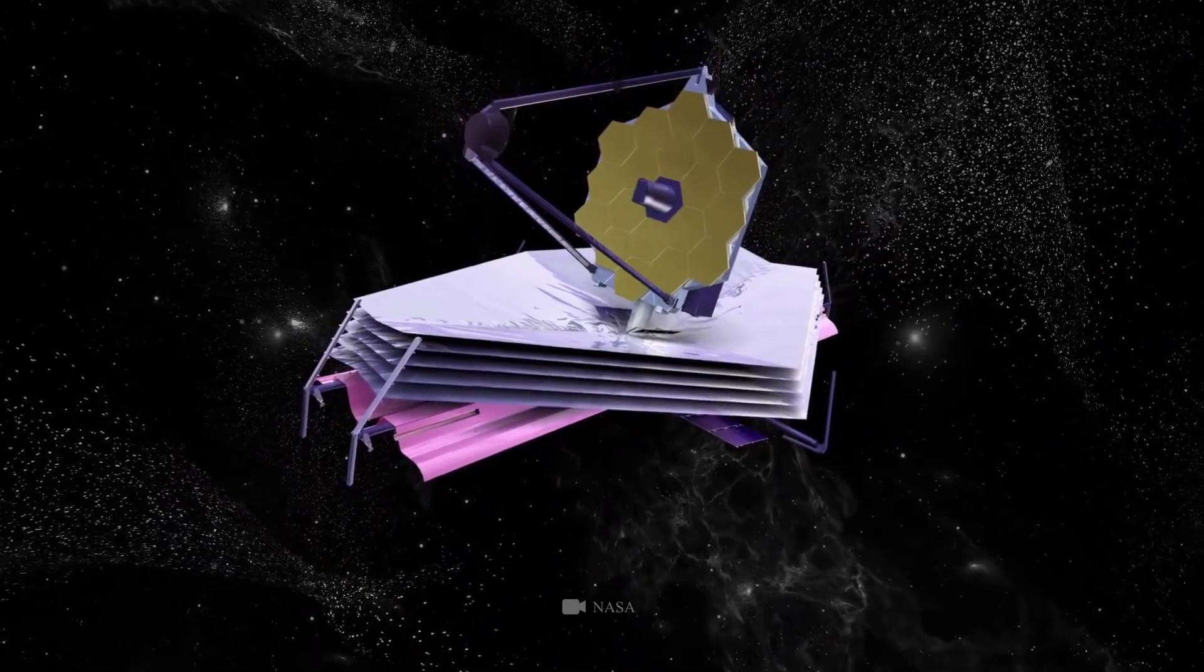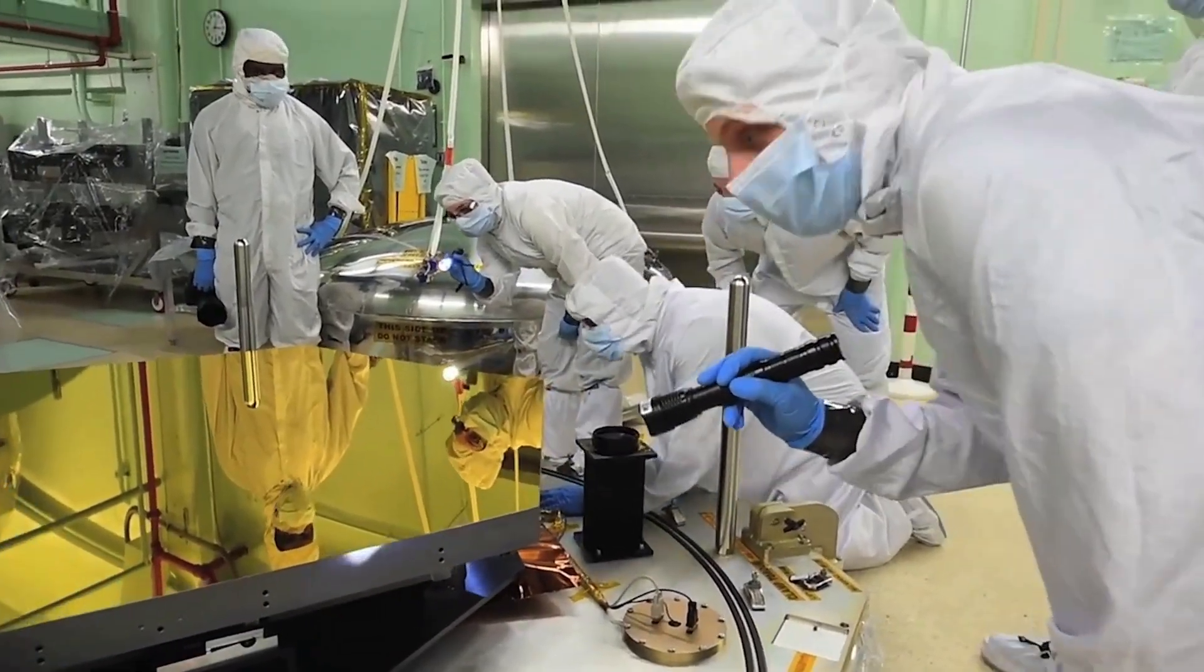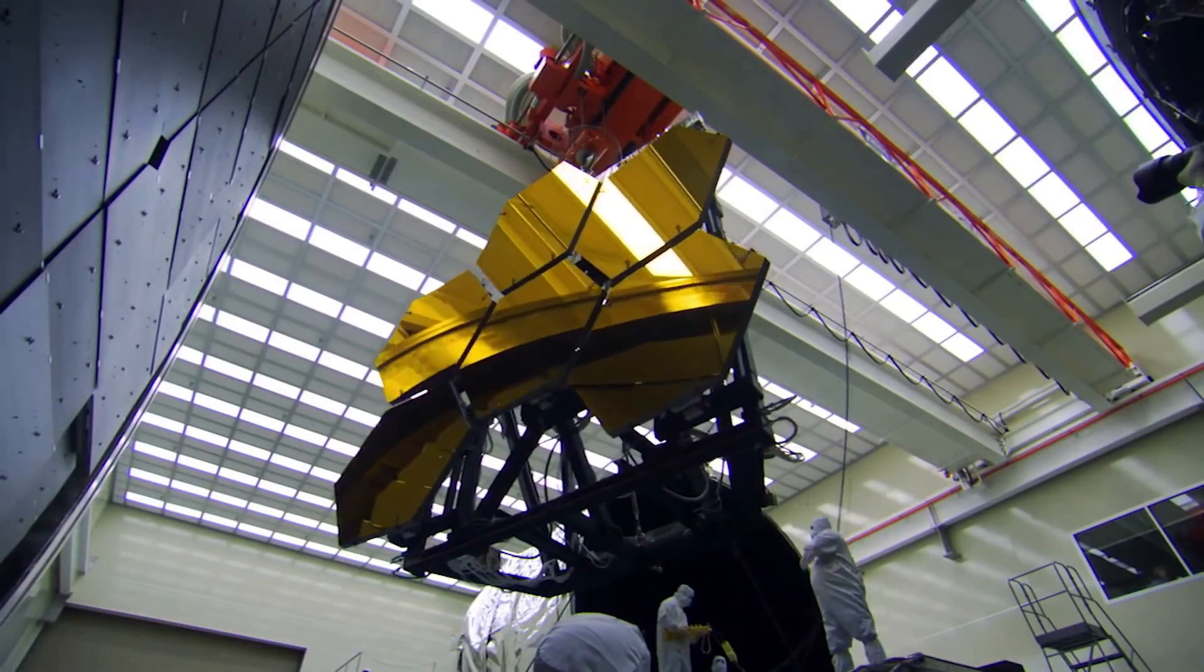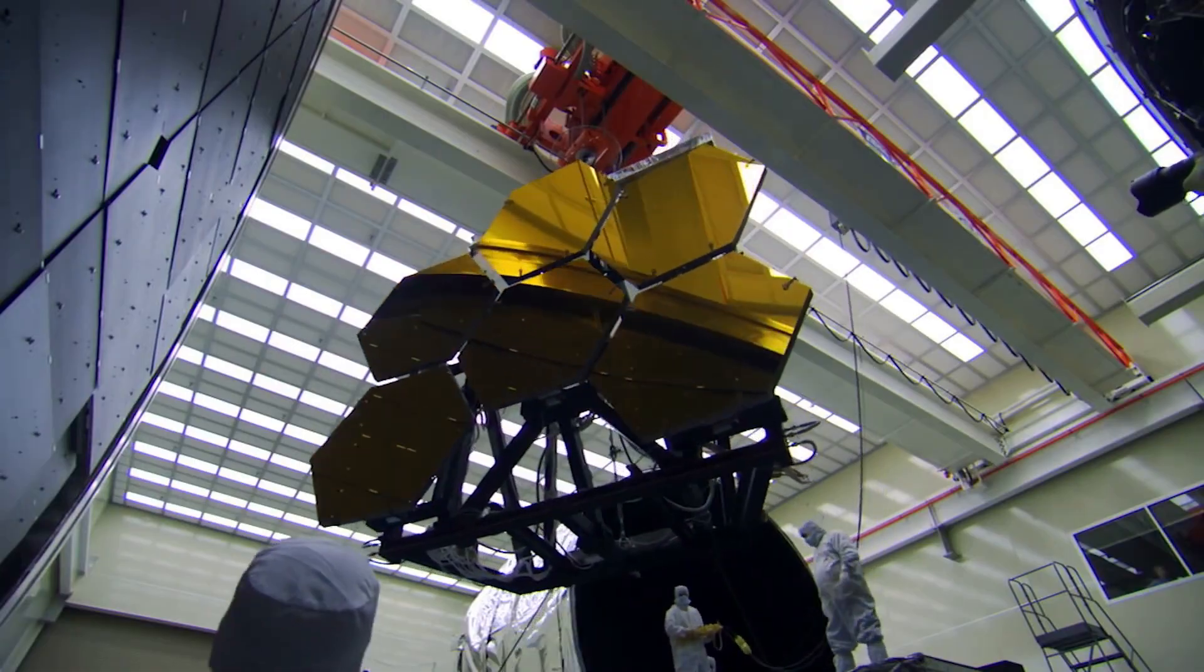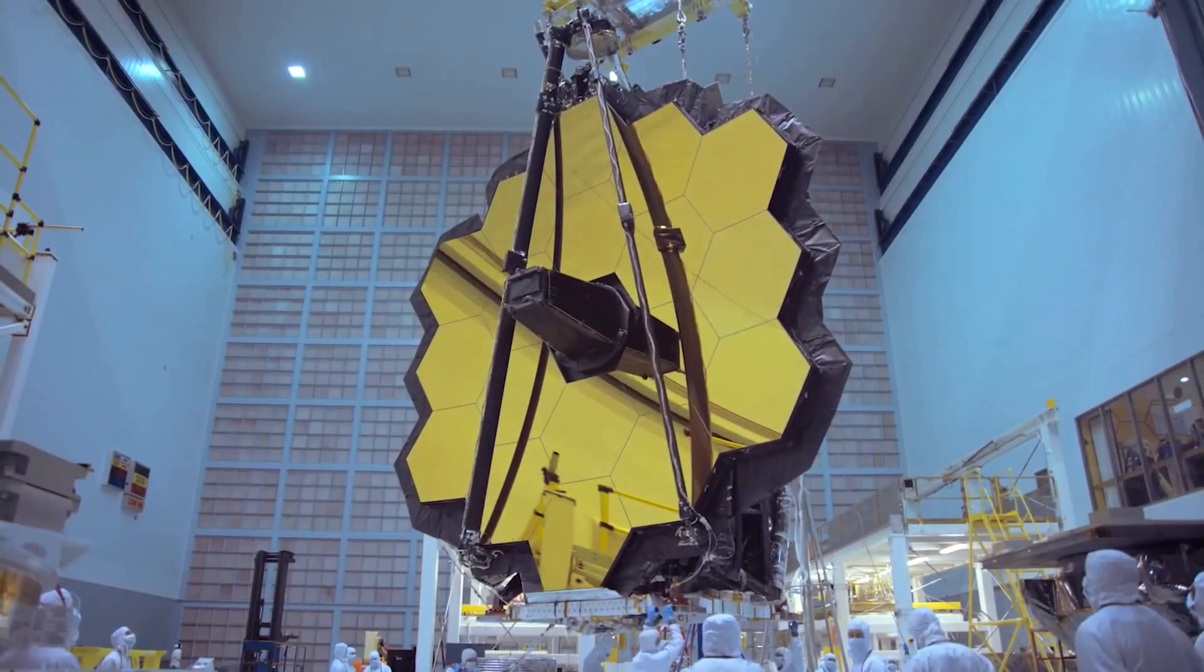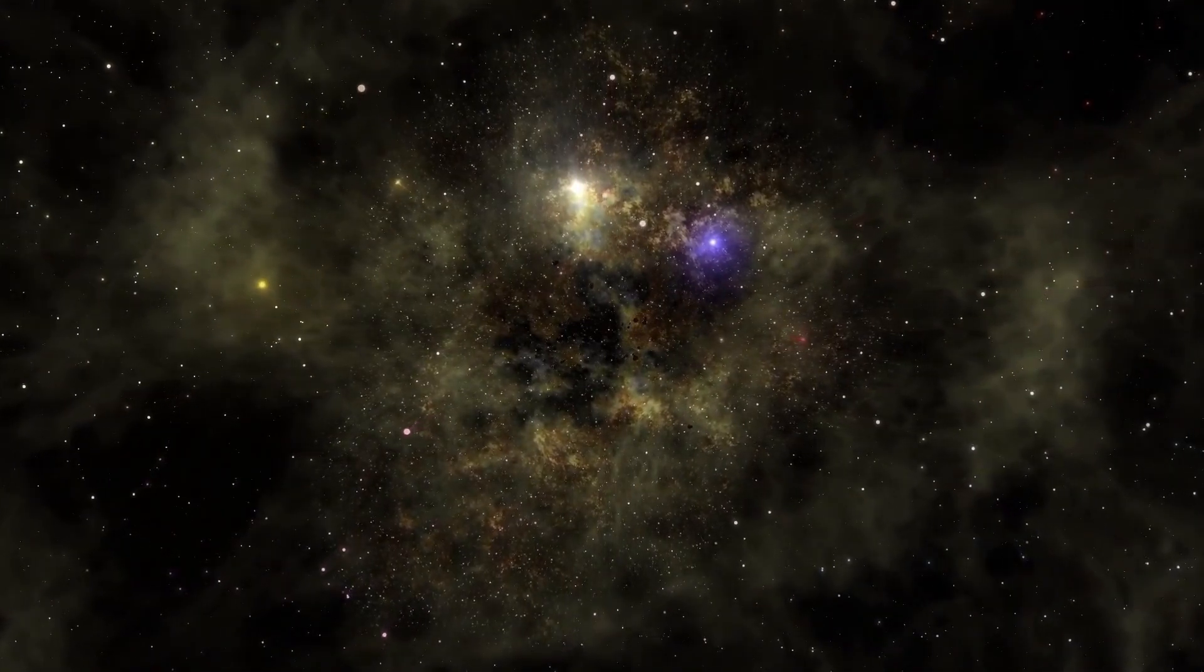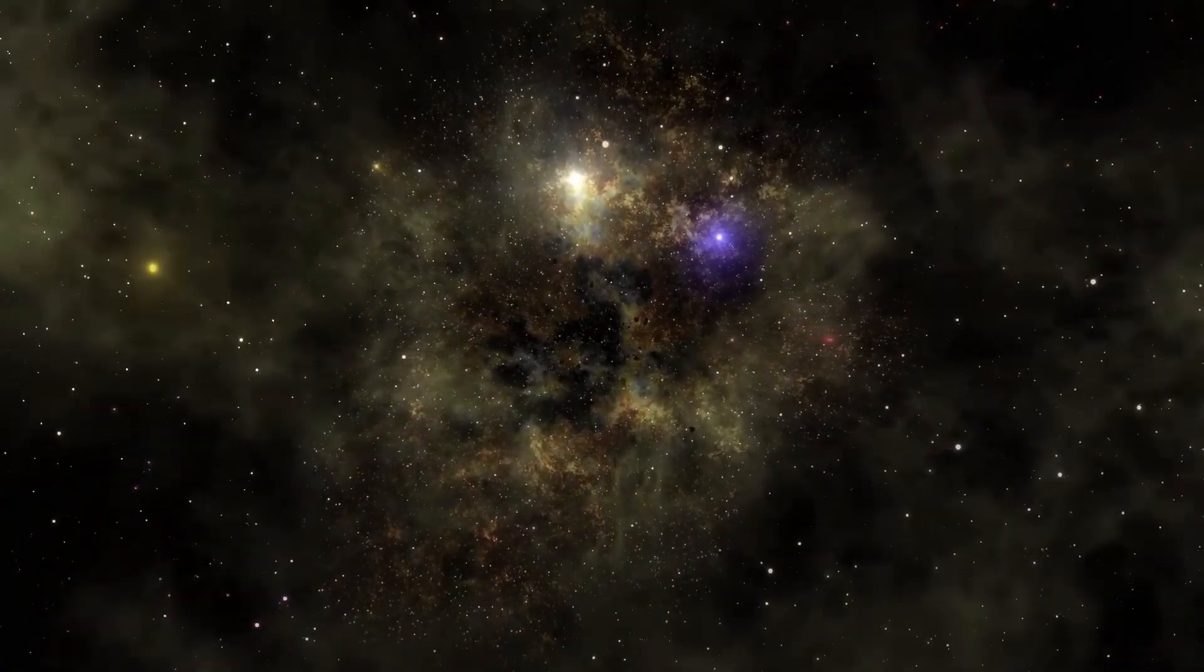This telescope will look much closer to the beginning of time. The James Webb Telescope is basically an orbiting infrared observatory that will complement and extend the discoveries of the Hubble Space Telescope with longer wavelength coverage and greatly improved sensitivity. The longer wavelengths enable Webb to look much closer to the beginning of time and to hunt for the unobserved formation of the first galaxies as well as to look inside dust clouds where stars and planetary systems are forming today.